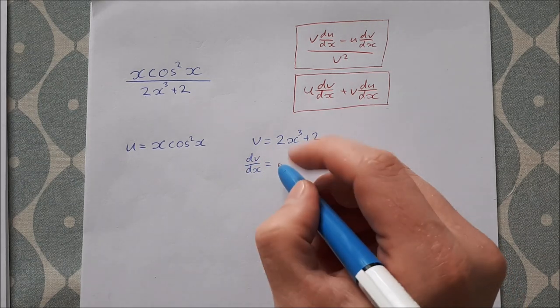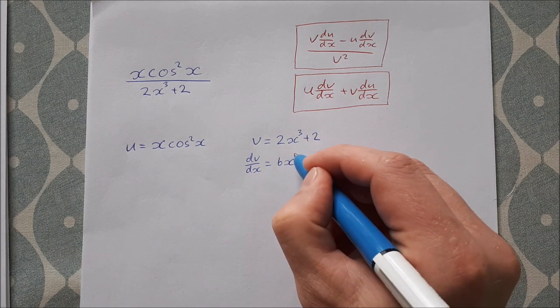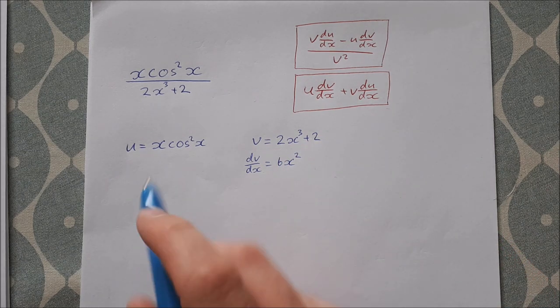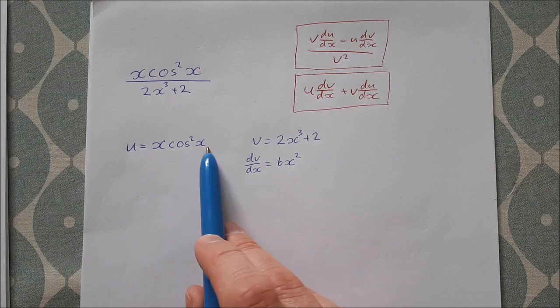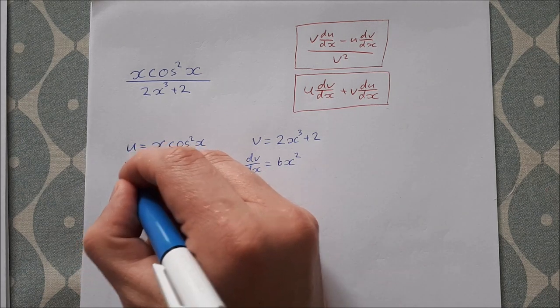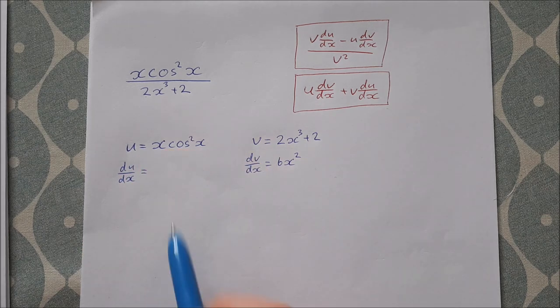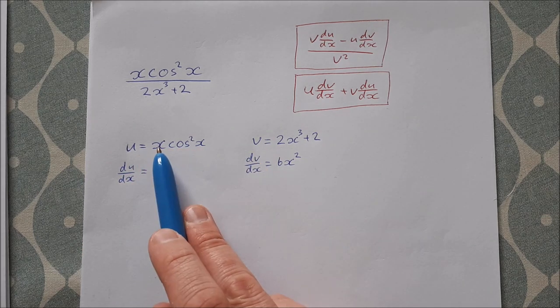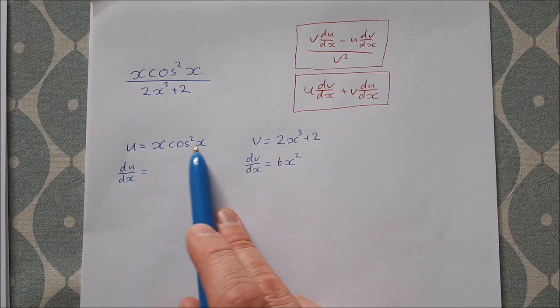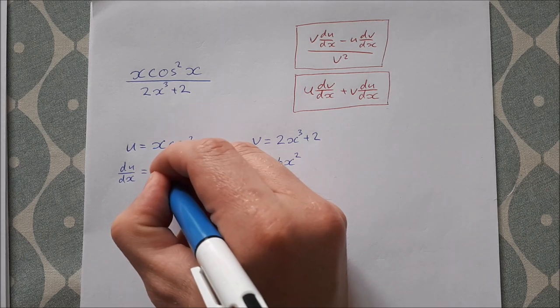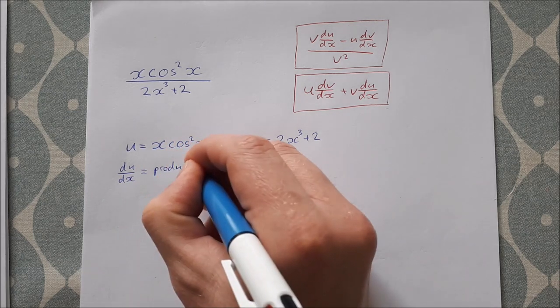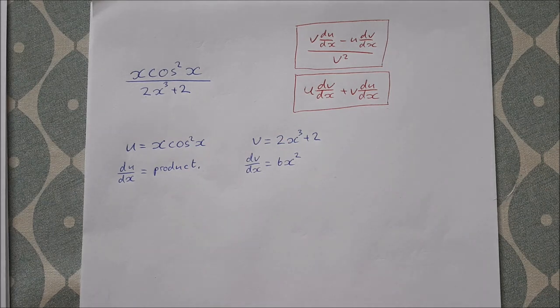Now dv/dx is easy enough. dv/dx is the derivative of the bottom line, so 3 by 2 is 6x². Now differentiating this to find du/dx, the top line—well, that's actually a product rule, isn't it?